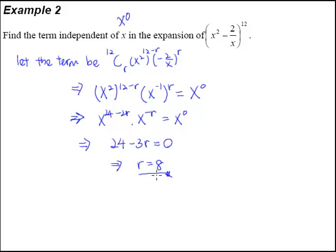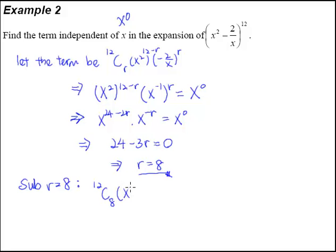Now what do we do? All we have to do is substitute r equals 8 into this general term. Remember, this is the term we're interested in. So substituting r equals 8, we will get 12C8, then x squared raised to the power of 12 minus 8, which gives us 4, and of course negative 2 over x raised to the power of 8. From your calculator, you will know that 12C8 is 495.